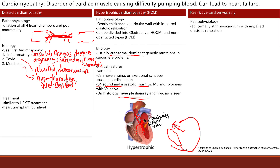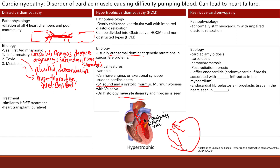Our last cardiomyopathy is restrictive cardiomyopathy, due to an abnormally stiff myocardium from fibrosis or infiltrative disease — for example, from hemochromatosis or sarcoid. This is also HFpEF with impaired diastolic relaxation. Etiologies include amyloid infiltration, sarcoid infiltration, hemochromatosis with iron depositing in ventricular walls, radiation-induced fibrosis, and Loffler endocarditis, which is fibrosis associated with eosinophilic infiltrates in the myocardium.